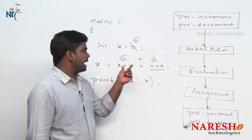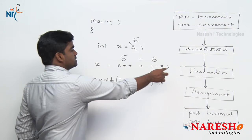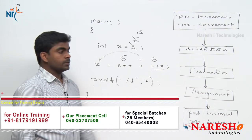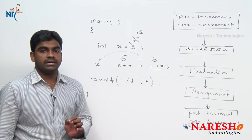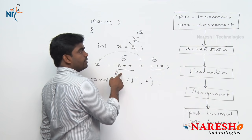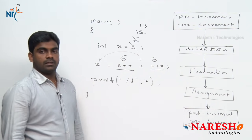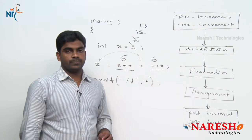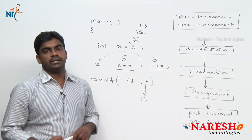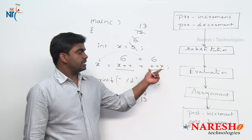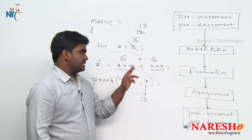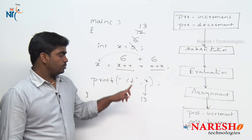Third step — evaluation: 6 + 6 = 12. Next step — assignment: 12 is assigned to x, so x value is now 12. Last step — post-increment and post-decrement: post-increment executes, x increases by 1, so x becomes 13. Expression evaluation is completed. Finally, we are printing x — x value is 13.